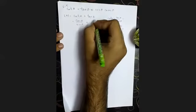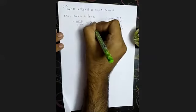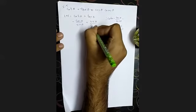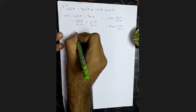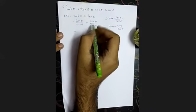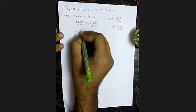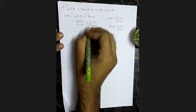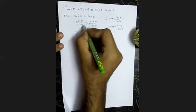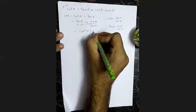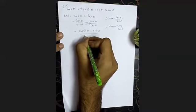Instead of tan theta, I am going to substitute sin theta by cos theta. Now I am going to cross multiply. Cos theta into cos theta gives cos squared theta, and sin theta into sin theta gives sin squared theta, all over cos theta sin theta.